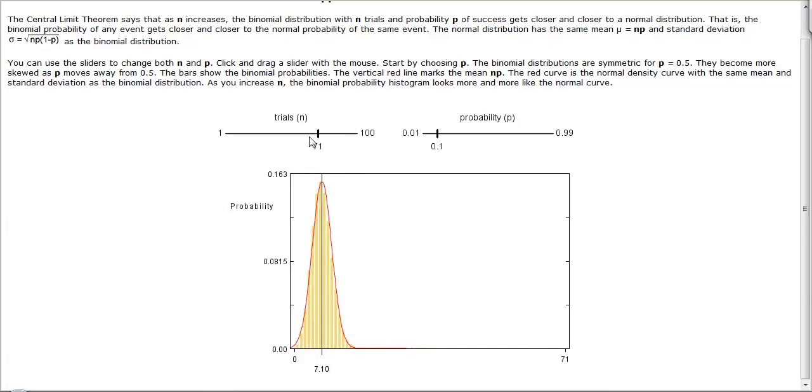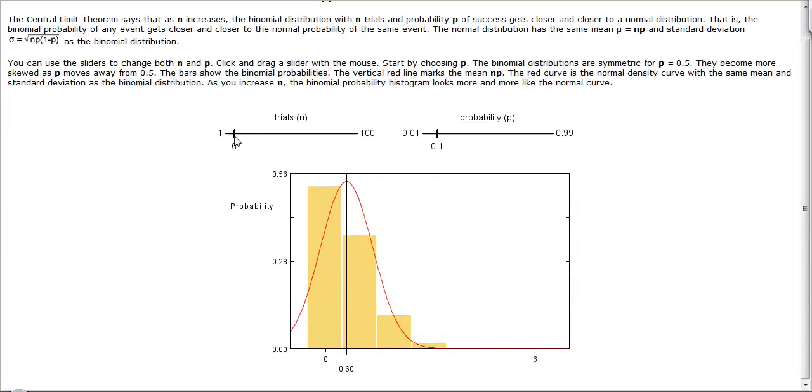We need a lot more trials with a low probability of success to match this up. If we go even lower, all the way down to 100, we can see that the matchup is not very good. I would need to increase this tremendously. Even at 100, the matchup is not very good. That is because this probability of success is extremely low. We would need way more than 100 trials to see the matchup.